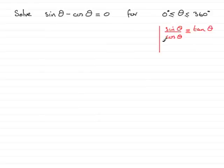So, we can use this quite easily on this equation. Because what we could do is just rearrange this first of all. We could add cos theta to both sides. So, therefore, we'd have sin theta equals cos theta.